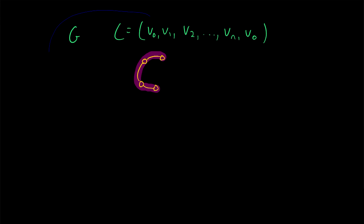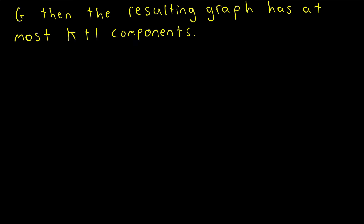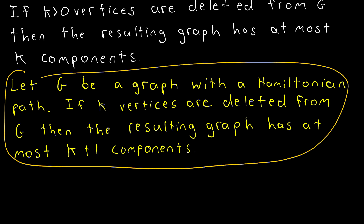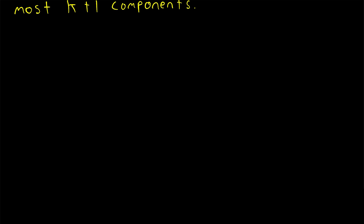If you're not already familiar with that fact, jot down a quick proof — it's a basic and useful result. The key issue is that when we delete a vertex from a Hamiltonian graph, the resulting graph has a Hamiltonian path but not necessarily a Hamiltonian cycle. So we can't prove this result using induction on the number of vertices, which is why we'll use the Hamiltonian path result instead.